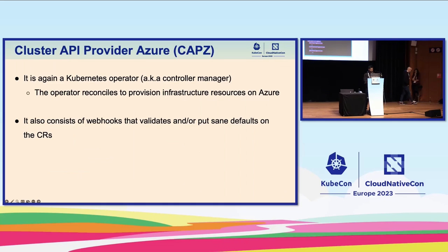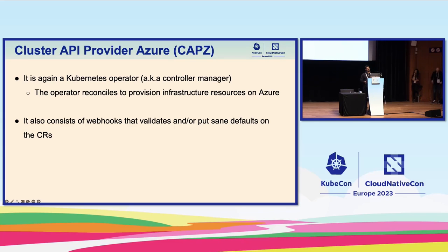Now for updates from specific providers. Cluster API Provider Azure is a Kubernetes operator — a controller manager — that reconciles various custom resources to provision resources on Azure and help you get a Kubernetes cluster. It also consists of a web server that validates your CR inputs and puts defaults on them, for example replica count on machine deployments.